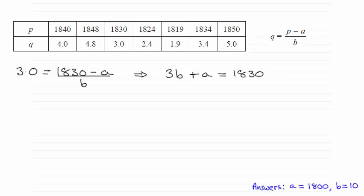There's one equation with the unknowns in. If I do it for another pair of values, let's say we do it with these end ones here, then I've got 5.0 equals the p-value which is 1850 and then minus a and that's all divided by b.